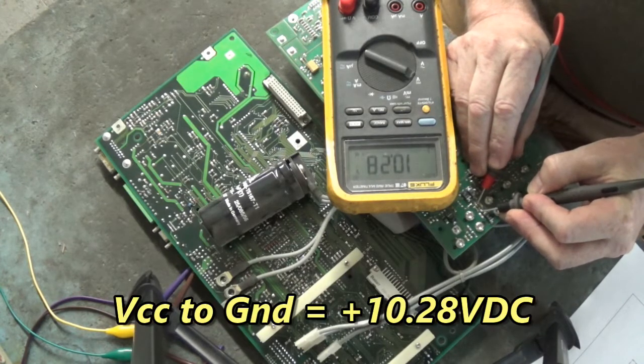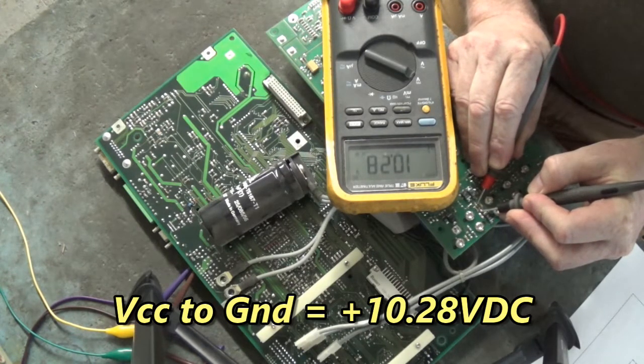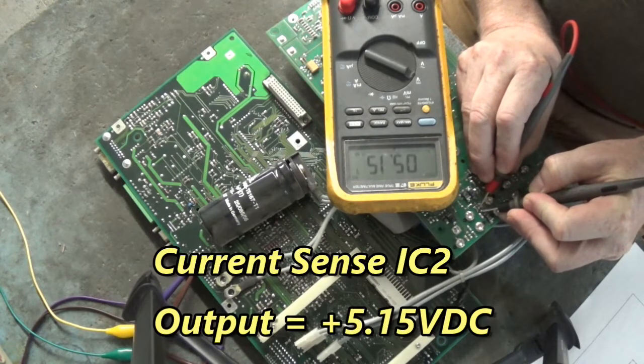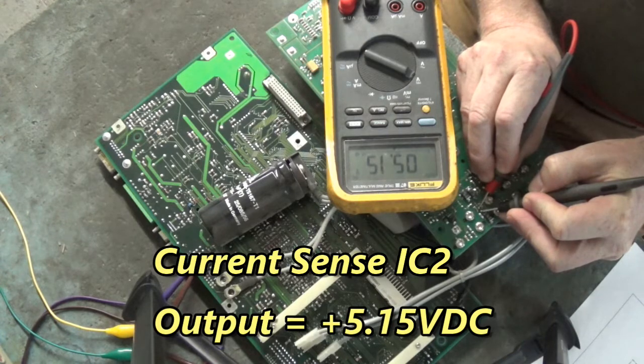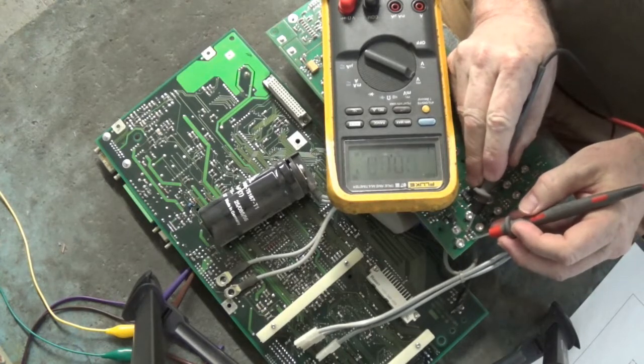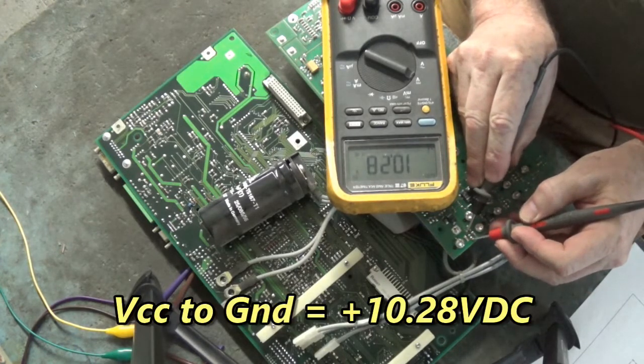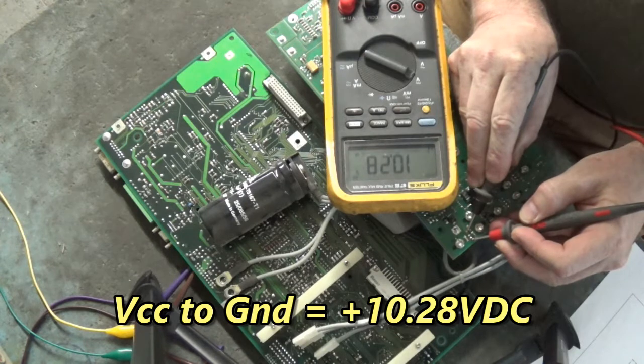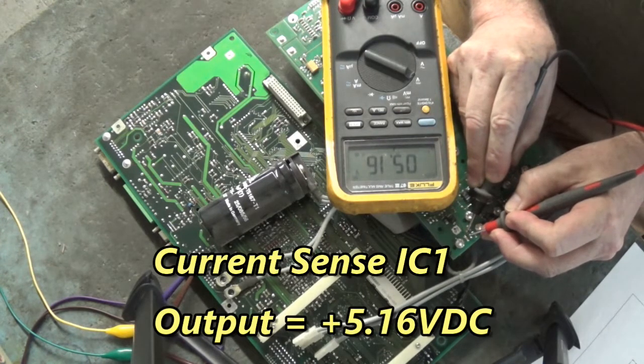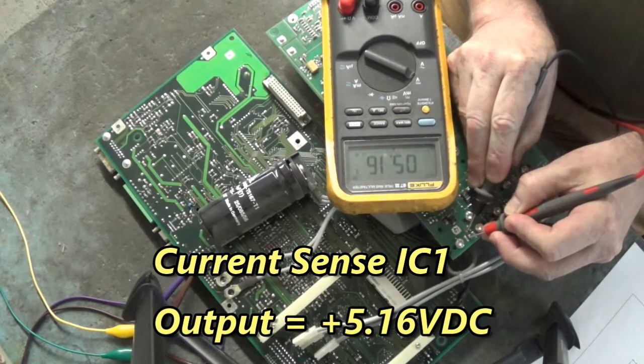There's VCC to ground, 10.28 volts DC. Here's the last one over here. Here's VCC to ground, 10.28 volts DC. Its output is 5.16 volts DC.